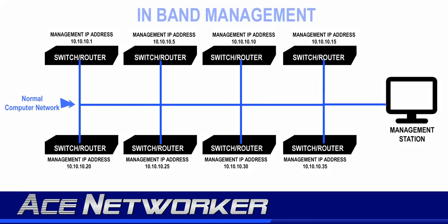Now, in-band management simply means you've added an IP address to the overall switch or router configuration that allows it to be communicated with over a remote connection, much like if that switch or router were just a desktop, laptop, printer, or server somewhere on the network. Giving it its own IP address for management is what allows it to be reached remotely to make changes to its configuration. So when we say in-band management, that simply means we're remotely managing that switch or router over the existing network.